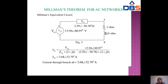In the Millman's equivalent circuit, the load across AB is 2 + J4 ohms. The current I = V_eq / (Z_eq + ZL) = 13.94∠60.97° / (2.59∠−58.74° + 2 + J4) = 3.68∠32.79°. This is Millman's theorem applied to AC circuits.